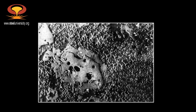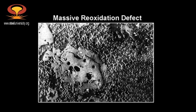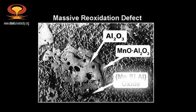In order to prevent reoxidation — and here is an example of the kind of defect that is formed when we see reoxidation — we need to use either protective gases or submerged entry nozzles. This massive inclusion shown in this slide consists of alumina, manganese aluminate and manganese aluminosilicate. The size of this kind of defect could be 500 microns or even larger and can easily be seen on the final product without the aid of a microscope. In other words, reoxidation defects are massive defects that destroy quality in the final product.